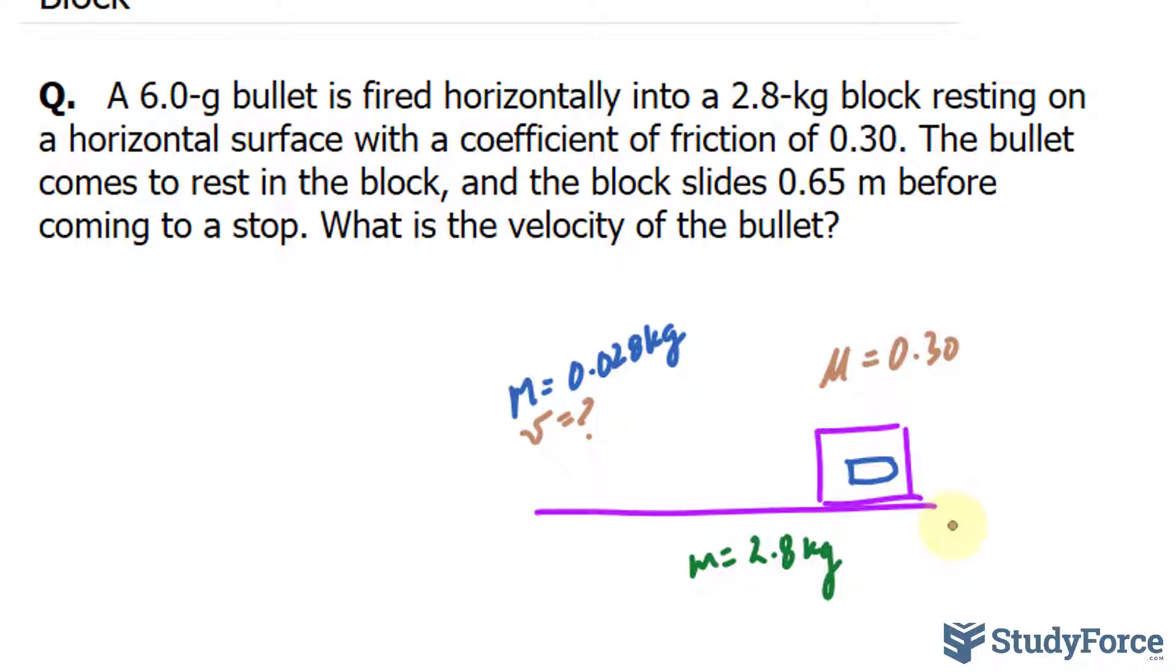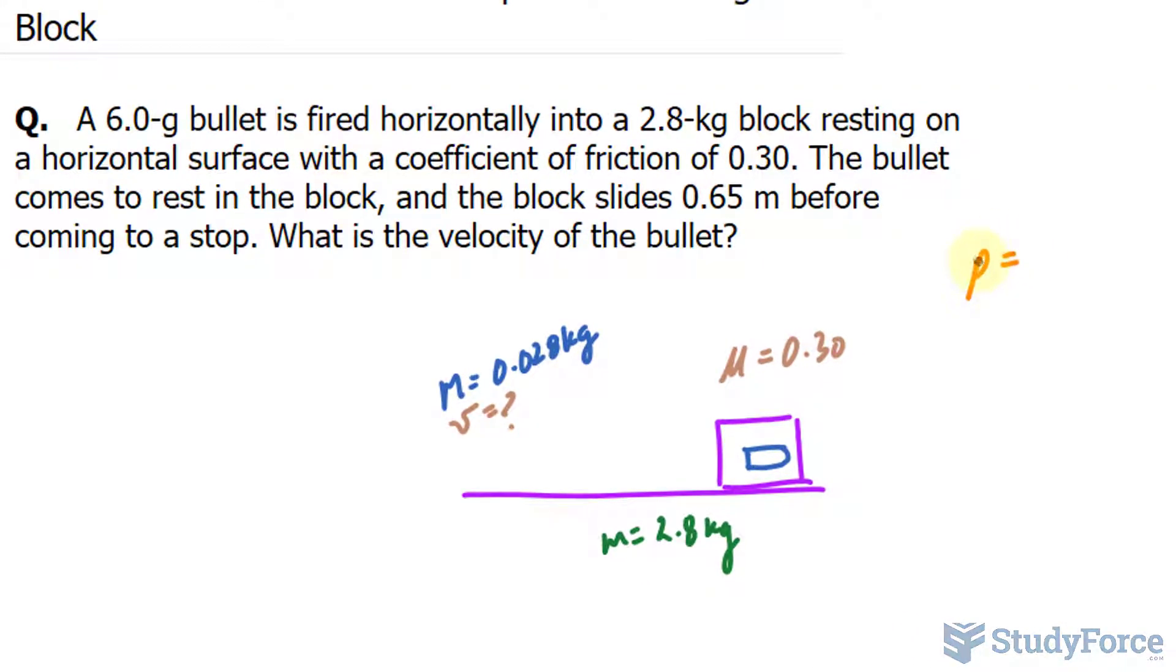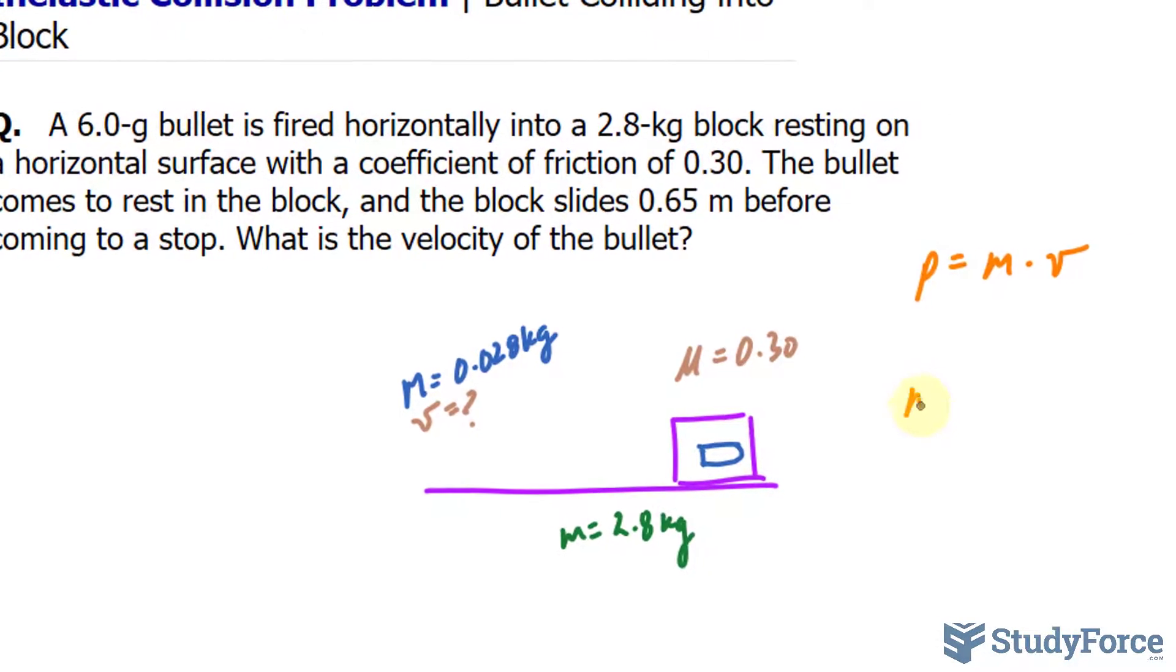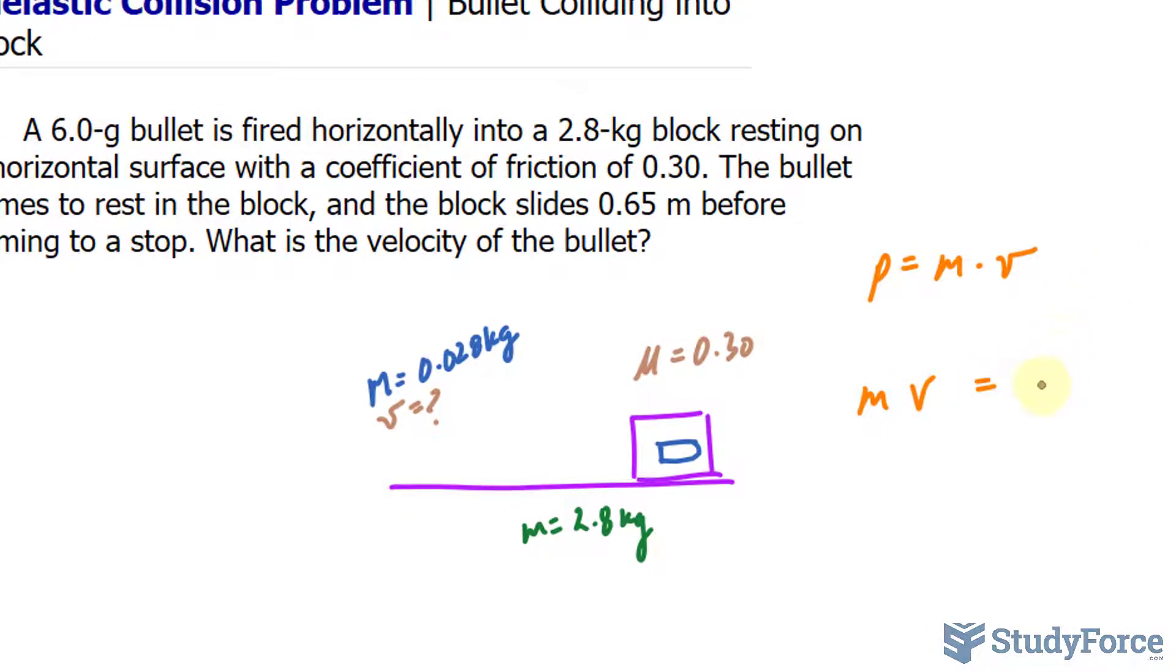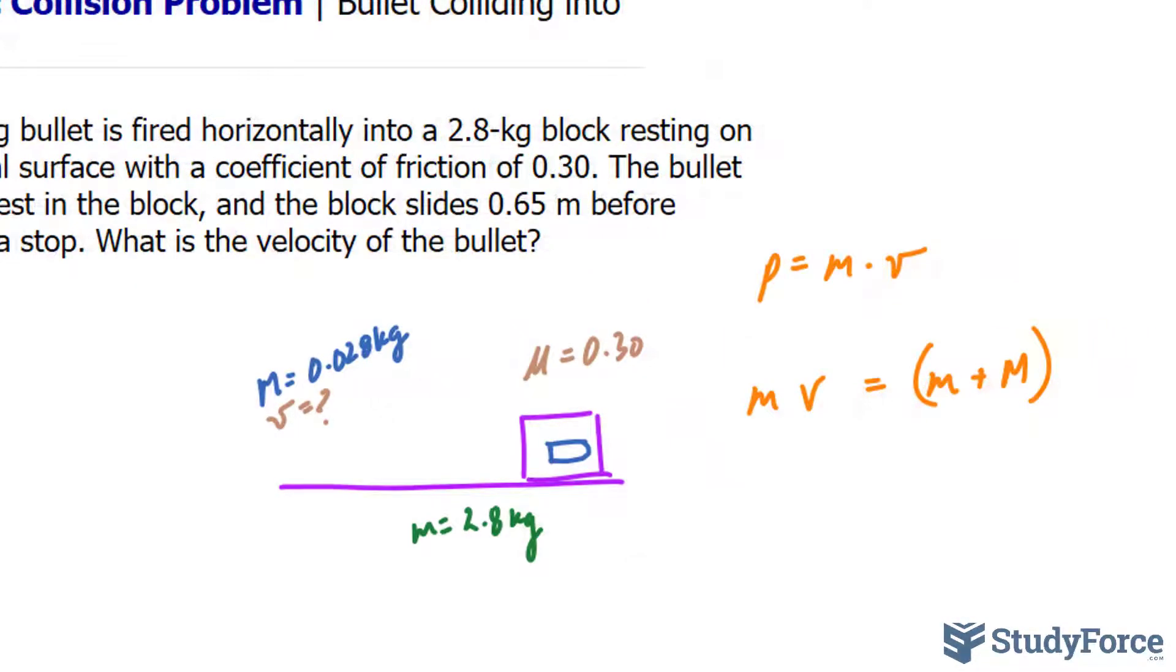So we need to set up two formulas, much the same way we did with our previous video involving the ballistic pendulum. The first formula relates momentum. Momentum is calculated, momentum being represented by the letter P, is mass times the velocity. Now because this is an inelastic collision problem, all the momentum of the bullet will be conserved and transferred into the bullet and block unit. So the momentum before is equal to the momentum of the combined bullet and block. I'll represent the mass of the block with capital M. So I have little m for the bullet plus capital M gets multiplied to the velocity of them being combined. I'll represent that by big V.